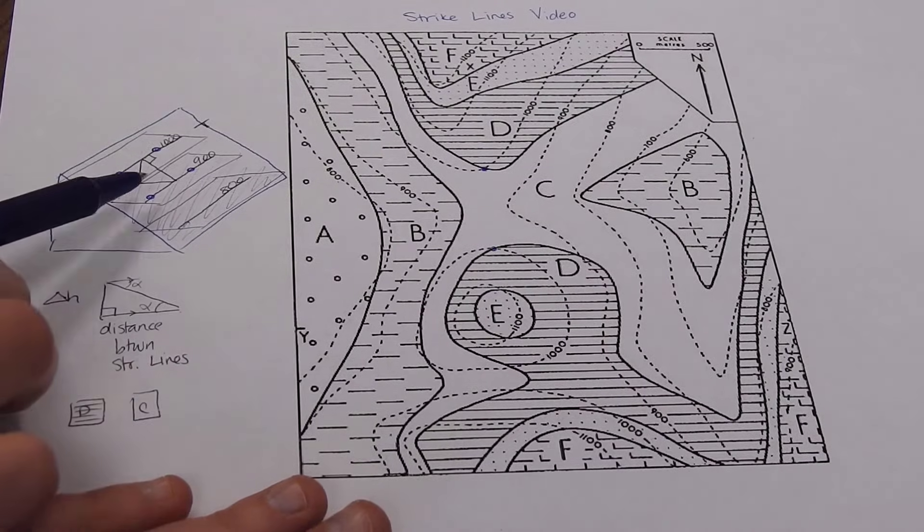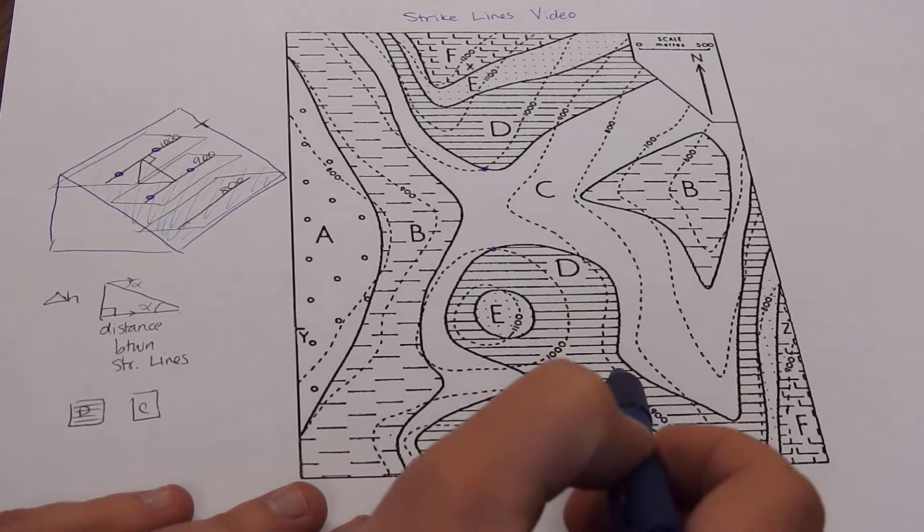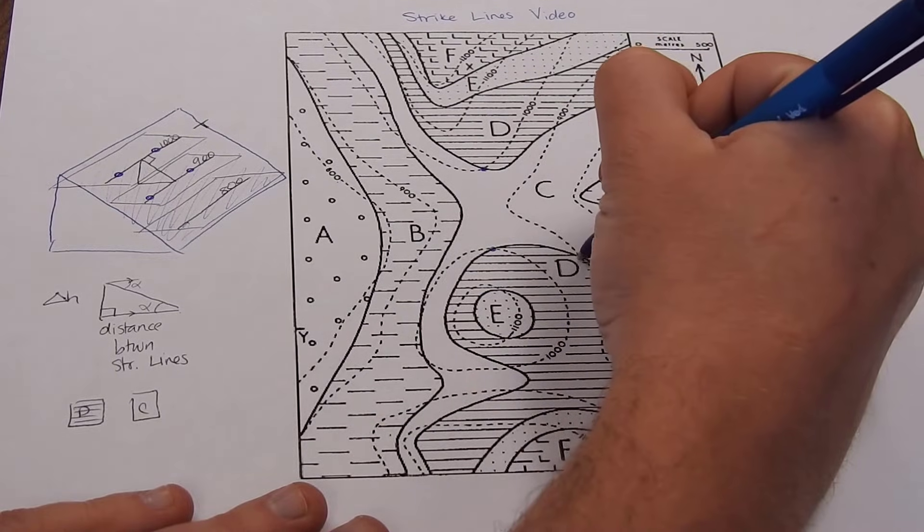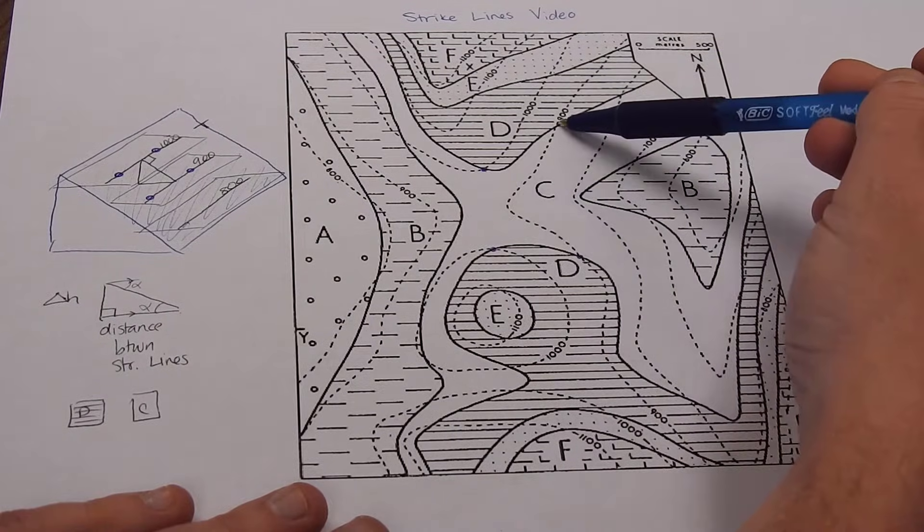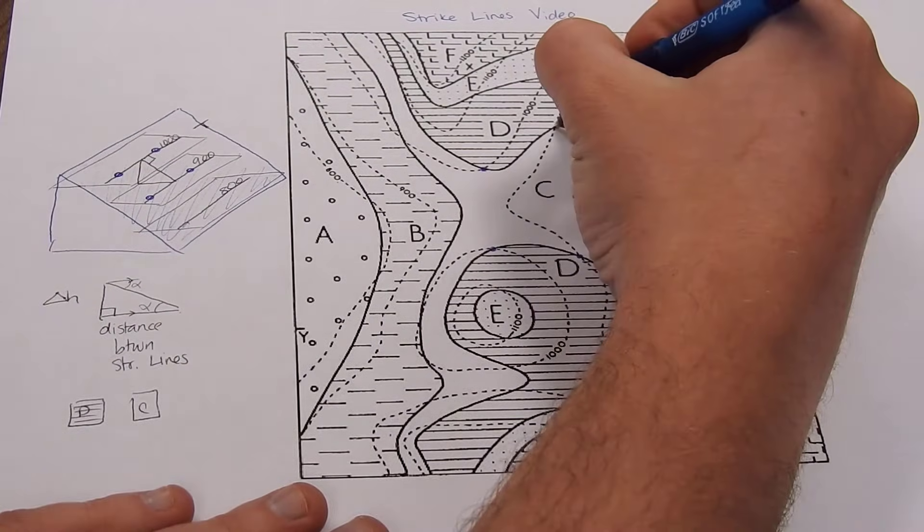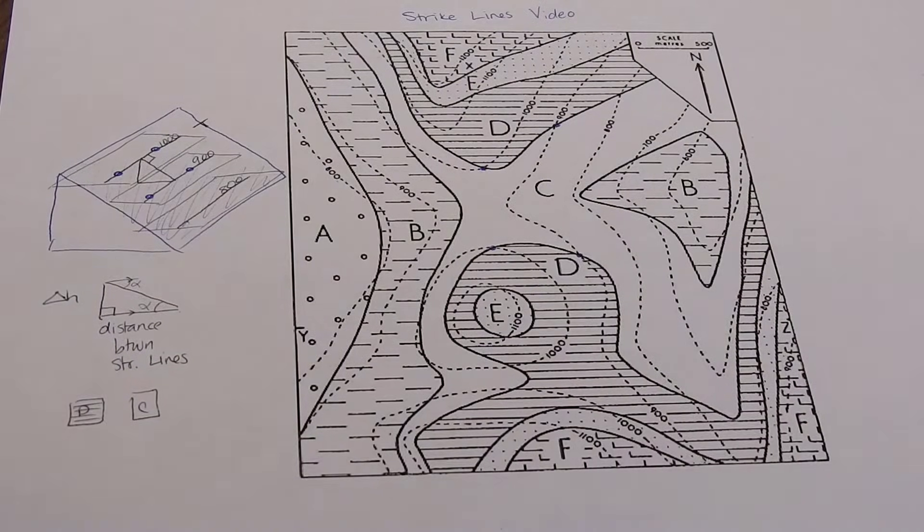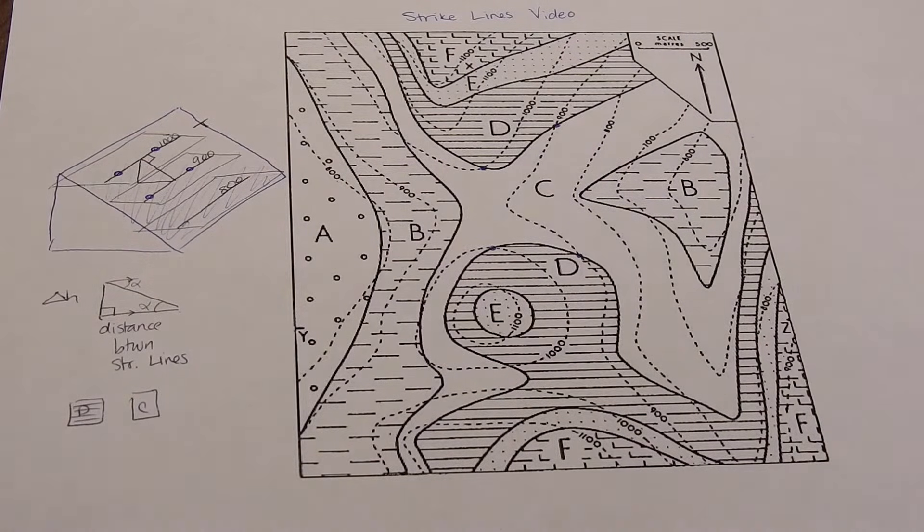And then let's see if we can find the two points for the 900. So we go along the 900. Here we find a point. Keep going. Here we find a point. So now we have four points. So let's make two lines out of those. Let's make the 1,000 strike line and the 900 strike line.